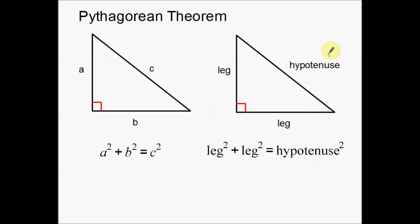Another way that I have seen it written is you can look at it more visually, where you take the legs of the triangle, square them, and add them together — that should equal the hypotenuse squared. That's a different way to look at the Pythagorean Theorem that you may not have seen before. It's the same equation, solved the same way, just looks a little bit different.